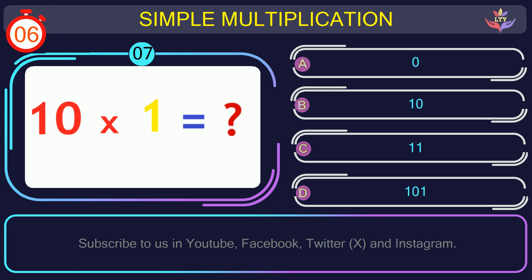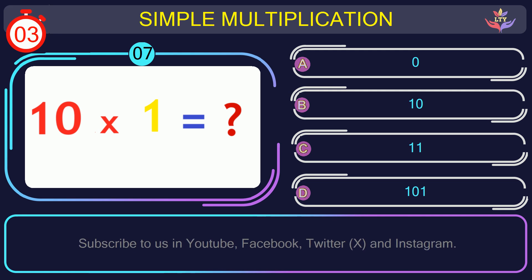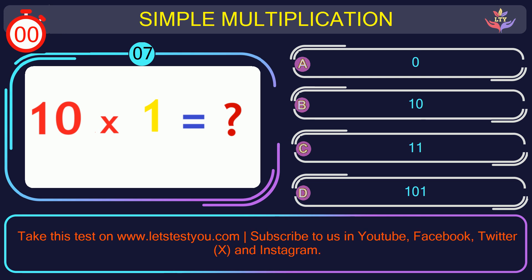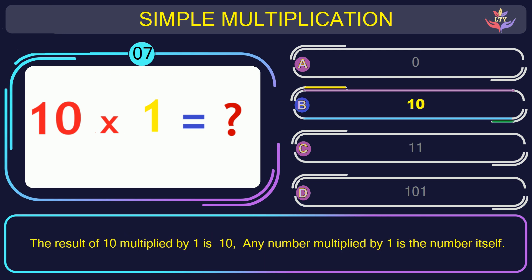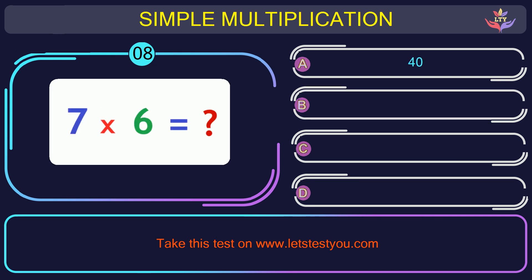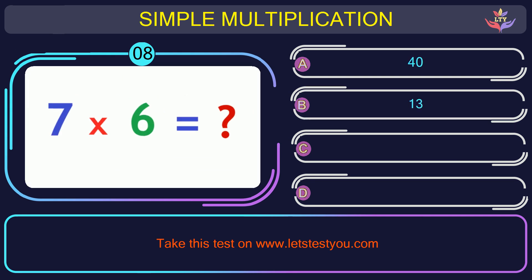Question number 7: find the result when you multiply 10 by 1. 10 multiplied by 1 is 10. Any number multiplied by 1 is the number itself.